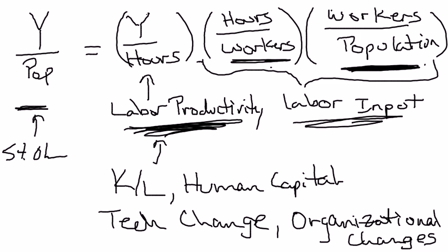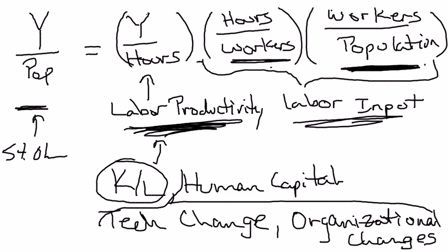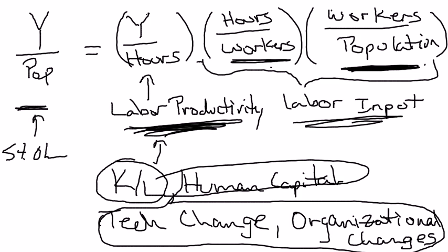In the model we build for labor productivity, we'll focus on the capital-labor ratio as a determinant. Technological change and organizational changes will go in another category. It turns out the capital-labor ratio and human capital are limited in how much they can drive labor productivity due to something called diminishing marginal returns. So ultimately it's going to be things like technological change that drive labor productivity, which means ultimately it's technological change that's driving increases in the standard of living over time.